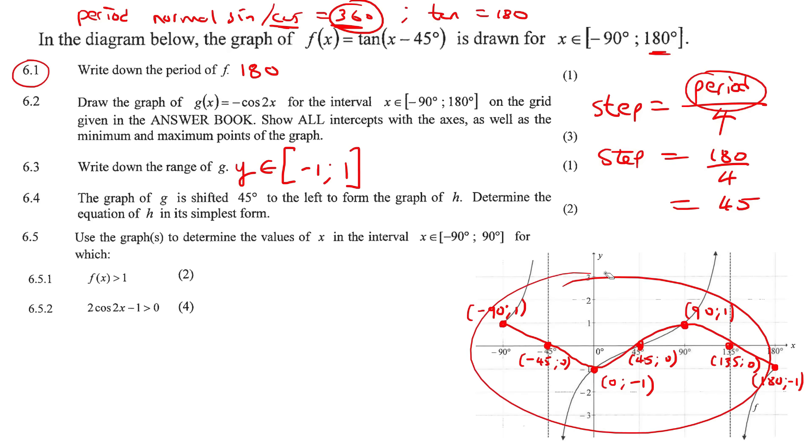Now it says that the graph of g, which is the one we drew, is shifted 45 degrees to the left to form a graph of h. What is the equation of h? Now remember I told you that there are four parameters. When you move a graph left, you are affecting the x value. And when you go left, you are going to say plus 45. Because when you go left, you say plus. And when a graph moves to the right, you say minus. So we know that the graph originally is this one. We're going to put negative cos. And then we know that the k value is a 2. Then we're going to open up a bracket. And we're going to say x plus 45.